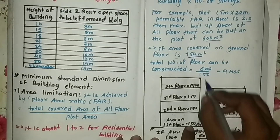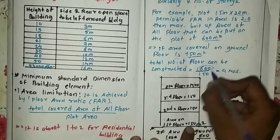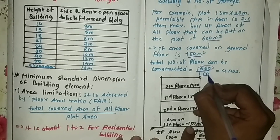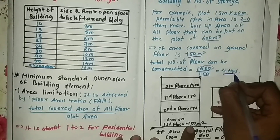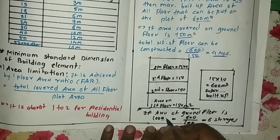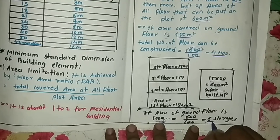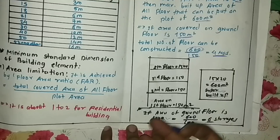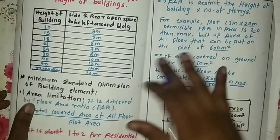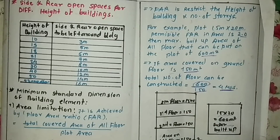With a ground floor area of 150 square meters: 150 × 4 floors = 600 square meters total, divided by plot area 300 square meters gives FAR = 2, so you can construct 4 stories. But if your ground floor area is 100 square meters, then 100 × 6 = 600, so you can construct 6 stories. As you decrease the covered area per floor, your building height increases, and as you increase it, height decreases.